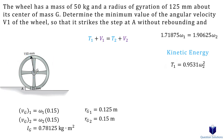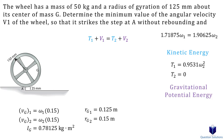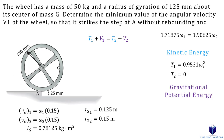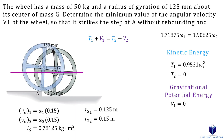Next, we have final kinetic energy. In this case, the wheel has made it over the step and stopped, so the final kinetic energy is zero. For the initial gravitational potential energy, let's draw the wheel right when it's about to go up the step and draw a datum through the center of the wheel. Since the wheel is on the datum, there is no displacement, so gravitational potential energy is zero. For the final gravitational potential energy, the wheel is on top of the step with a vertical displacement of 0.025 meters upward.